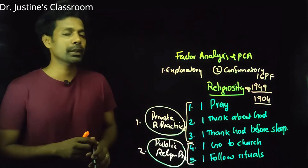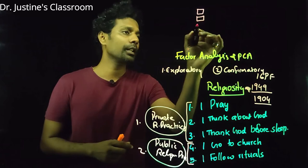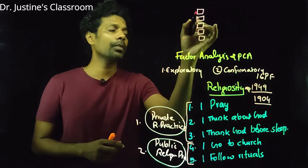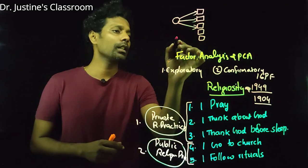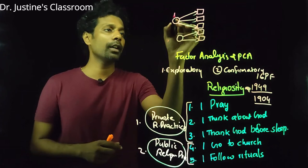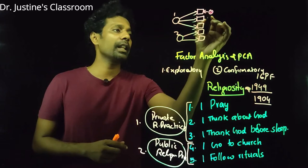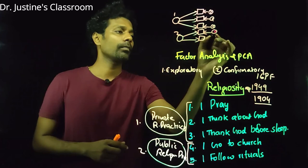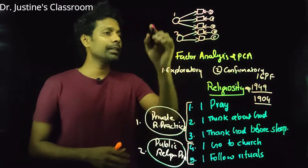In factor analysis, observations — generally represented as squares — are explained by latent factors. For example, these three observations are based on latent factor one, and another two observations are based on latent factor two. Each observed variable also has an error term (e) attached to it. This is the general concept behind factor analysis.